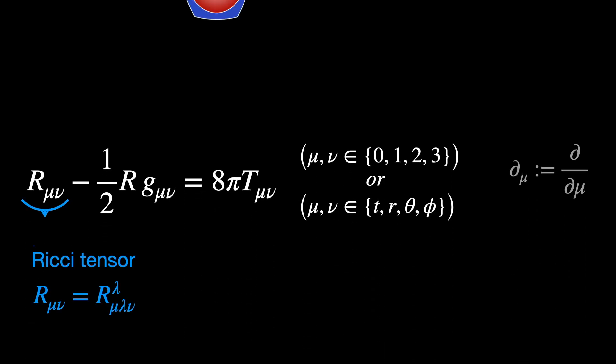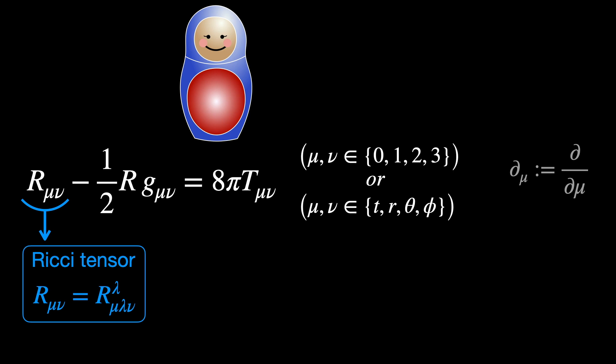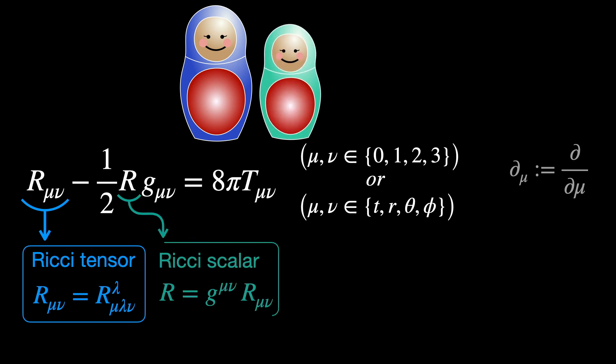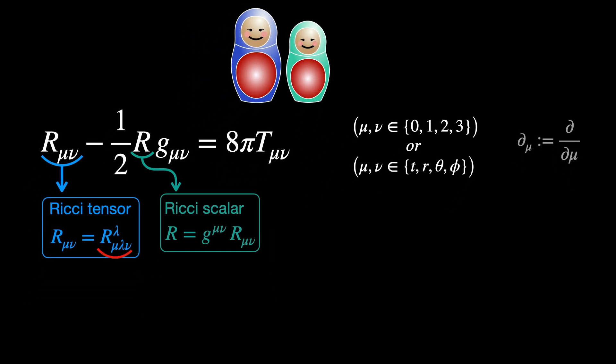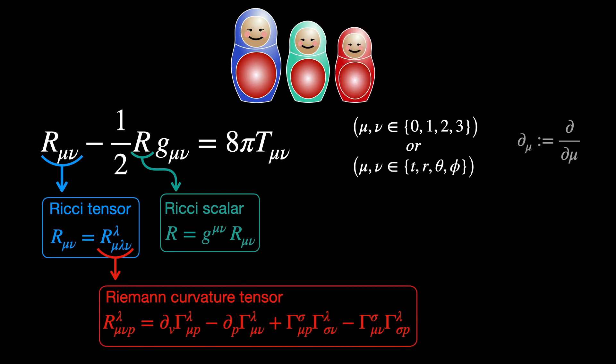The discovery of what we now know as the Schwarzschild solution was very surprising at the time because the Einstein field equations are a set of complex, highly non-linear partial differential equations. Just to illustrate how complex these equations are, notice the matryoshka doll's effect of trying to express it just in terms of the metric tensor g_μν.